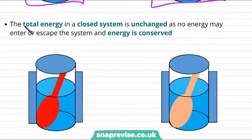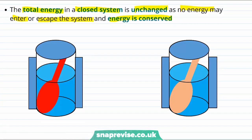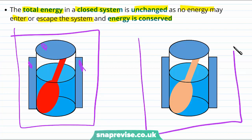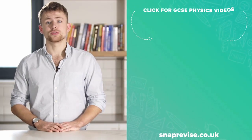On the other hand, the total energy in a closed system is unchanged, because no energy can enter or escape the system and because energy is conserved. For our example of a closed system, we'll use the same hot spoon in water, but this time we'll imagine that the container is firmly insulated, which stops any heat escaping the system. Then when the spoon has cooled down, all of the heat must have gone into the water because there was nowhere else for the heat to escape. Therefore, in this system, energy is conserved.